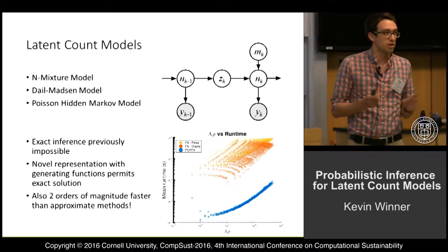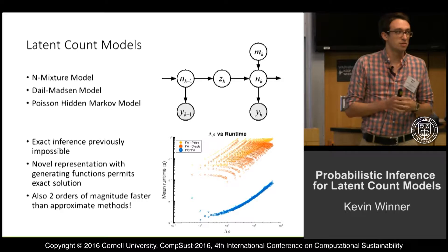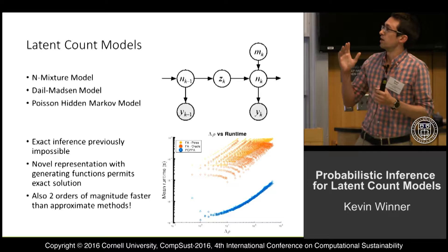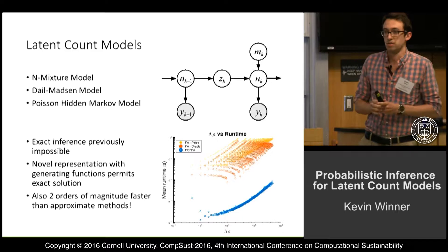Here's a common straightforward problem from population modeling. Given a set of noisy observations of a population over time, can we infer the abundance of the population corresponding to each one of those observations?